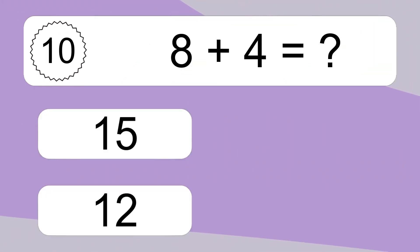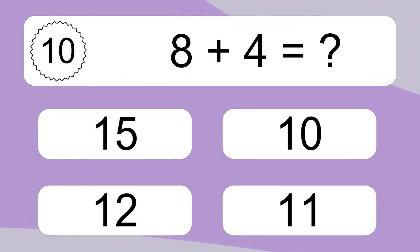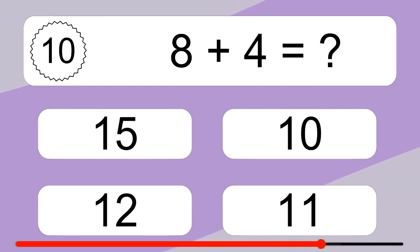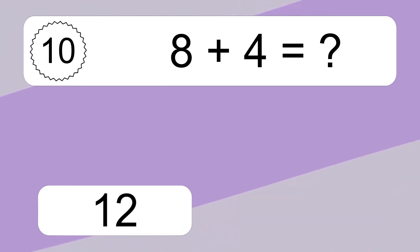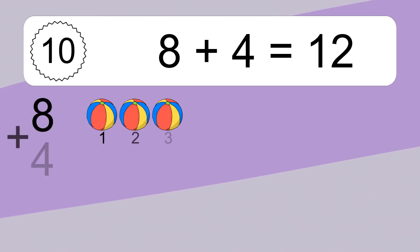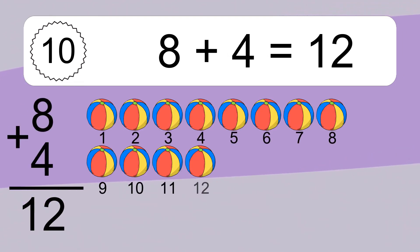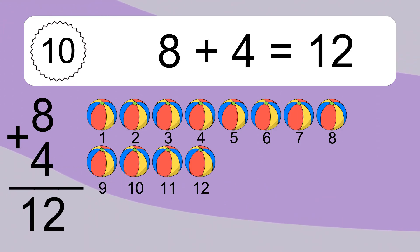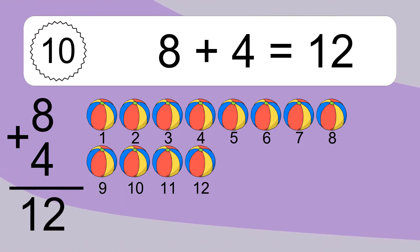8 plus 4 equals what? 8 plus 4 equals 12. Let's count it. 1, 2, 3, 4, 5, 6, 7, 8, 9, 10, 11, 12.